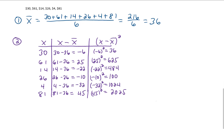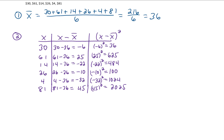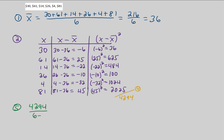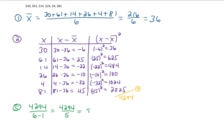We found the mean in step 1, created and filled out the chart in steps 2 and 3. Now in step 4 we add all the values from the third column, getting a total of 4,294. For step 5, we divide by n minus 1 — our n is 6, so we divide 4,294 by 5, giving 858.8. For the final step, the standard deviation is the square root of 858.8, which is approximately 29.31.